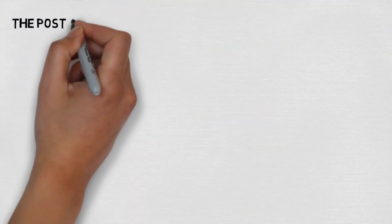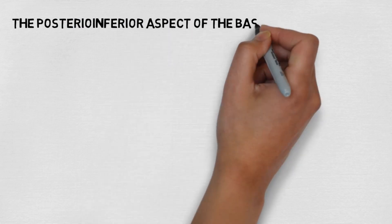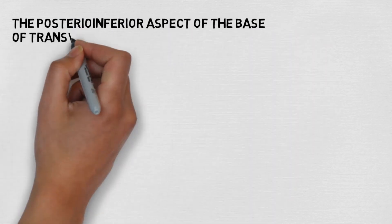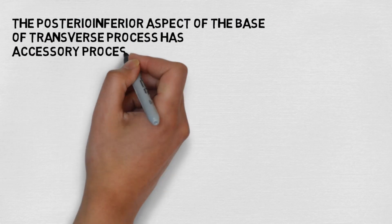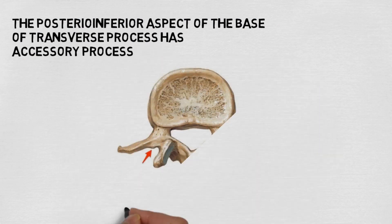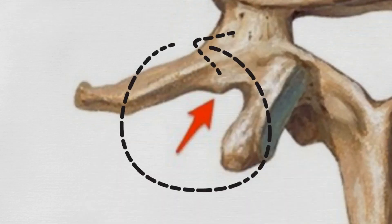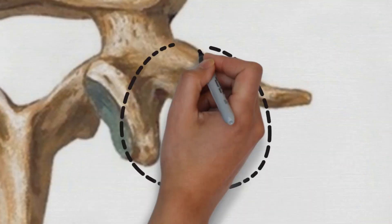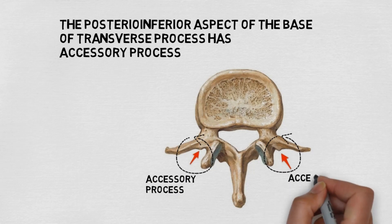The next point is about the transverse process. The posterior inferior aspect of the base of the transverse process has another process called the accessory process. Let's see these processes — these small bulging out processes which you can see are the accessory processes on both sides.